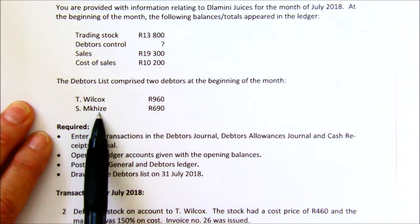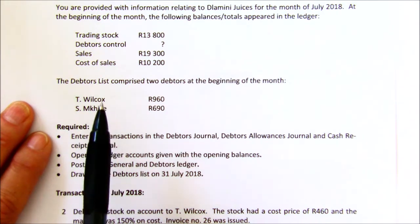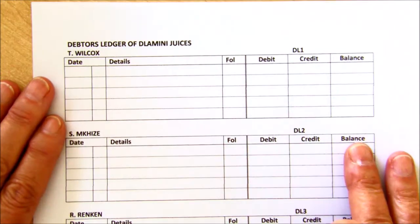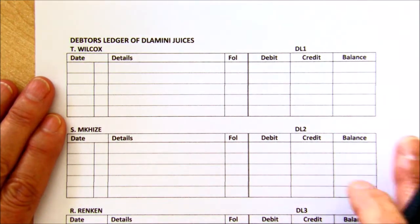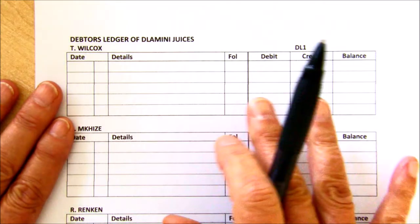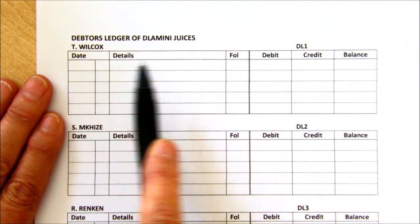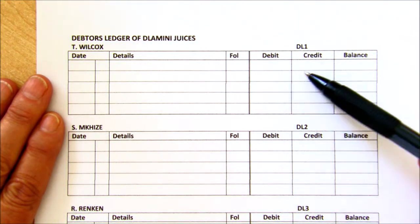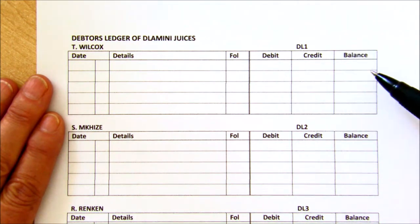You're also given two debtors. Remember, we're going to have to adapt our records to record the fact that we've got people that owe us money. The first thing you're going to bring in is what we call a debtor's ledger. This is secondary — extra to the general ledger where we have our double entry. The debtor's ledger keeps a record of each individual person, so you'll have an account for each one of your debtors. It's set out slightly differently — not the traditional T-account. We still have a debit and a credit, but they're next to each other, and then we have a balance that we calculate after each entry.